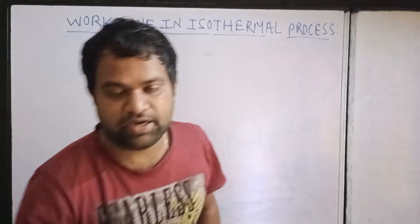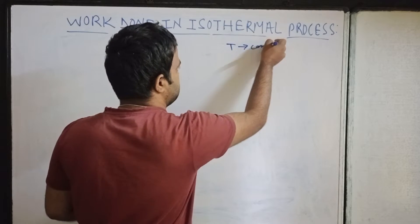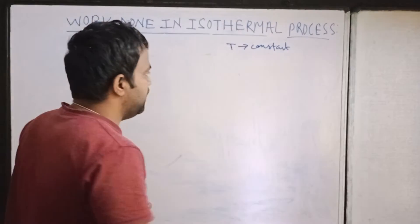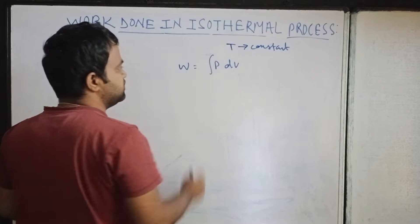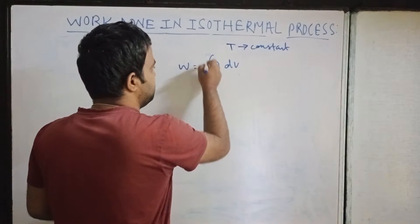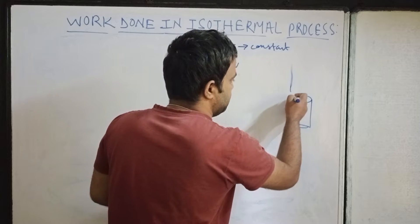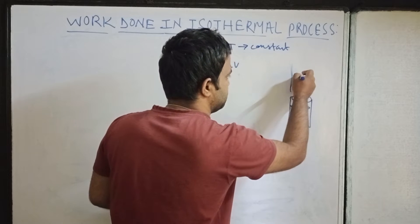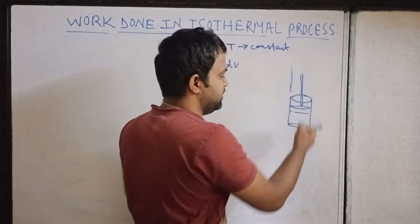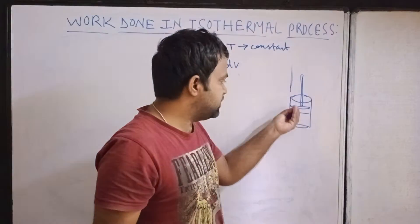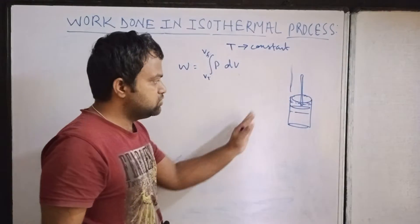We'll calculate the work done in an isothermal process. For an isothermal process, temperature is constant, and work done is the integration of P dV from VI to VF. Consider a cylindrical system with a piston fitted into it. When you compress it, the piston goes down and volume reduces. When you expand it, heat is provided, internal energy increases, the gas expands, and the piston goes up so volume increases.